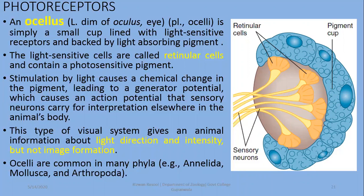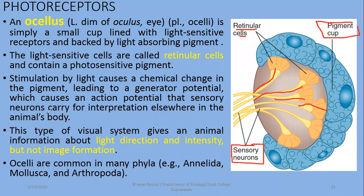Another type of photoreceptor observed in invertebrate groups is the ocellus. An ocellus is simply a cup-shaped receptor lined with light-sensitive pigment backed by a light-absorbing pigment. There are retinular cells ultimately connected with sensory neurons. Stimulation by light causes a chemical change in the pigment, which stimulates the sensory neurons to generate an action potential. This type of visual system gives the animal information about light direction and intensity, but no image is formed.